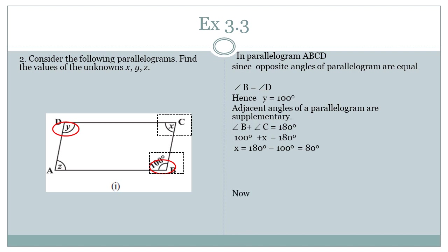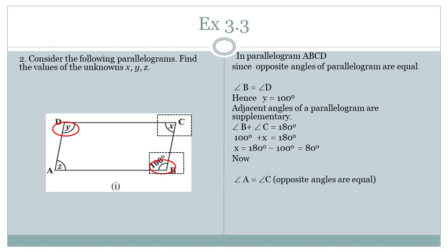Angle C and angle A are opposite angles. As per the property of parallelogram, they are equal to each other, so Z equals X, that is 80 degrees. So we get angle X = 80°, angle Y = 100°, and angle Z = 80°.